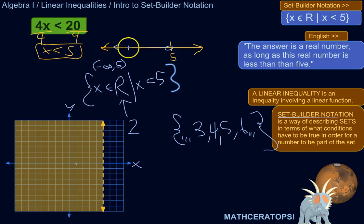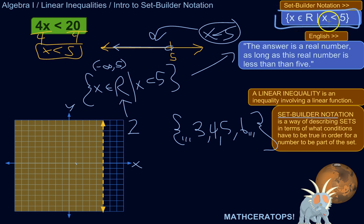x has to be a real number, and I'm just doing that to be kind of technically correct. No imaginary numbers allowed. x is a real number such that x is less than 5. So anything less than 5. So to kind of convert this into normal English, so this or this or this as set builder notation is this, and to convert that into kind of normal English, the answer is a real number as long as this real number is less than 5. That's kind of how I would translate that.